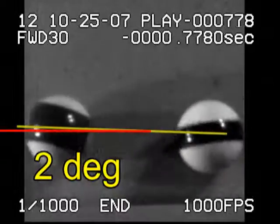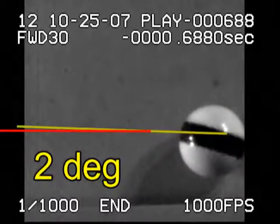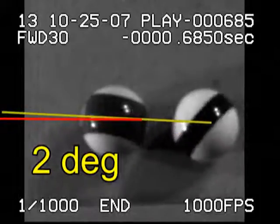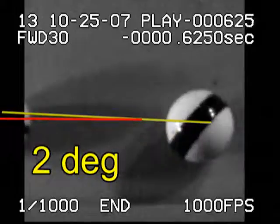With faster speed we get less throw, in this case only about 2 degrees. With more English, in this case maximum English, we also get less throw.